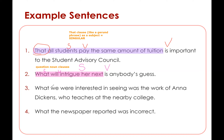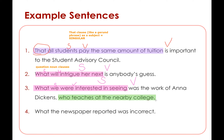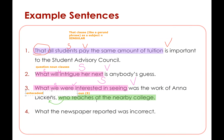Number three: what we were interested in seeing was the work of Anna Dickens. So the entire noun clause — what we were interested in seeing — is functioning as our subject, and that's why the verb was is singular. And as a quick review, we can see that who teaches at the nearby college — the who here is our relative pronoun functioning as subject, modifying the antecedent Anna Dickens — so this is our adjective clause, and it is our non-essential adjective clause because it comes with a comma.